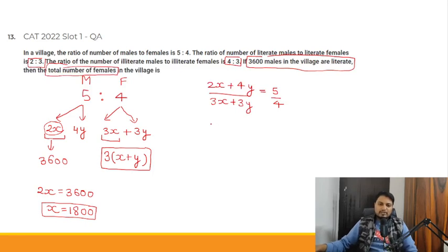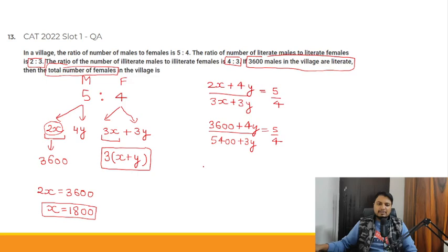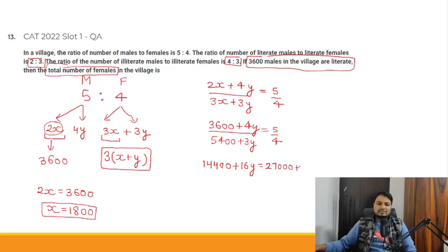Substituting: 2x = 3600, so numerator is 3600 + 4y. Denominator: 3 × 1800 = 5400, so 5400 + 3y. Cross multiplying: 4(3600 + 4y) = 5(5400 + 3y), giving 14400 + 16y = 27000 + 15y.